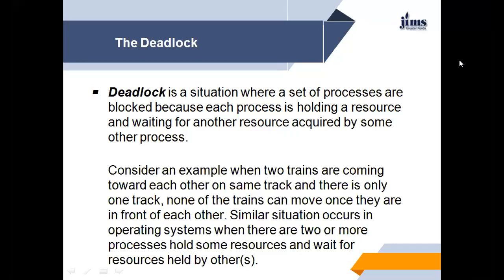Let's see this example: when two trains are coming towards each other on the same track and there is only one track, none of the trains can move once they are in front of each other. A similar situation occurs in an operating system when there are two or more processes which hold a resource and are waiting for a resource held by others. That is called a deadlock.